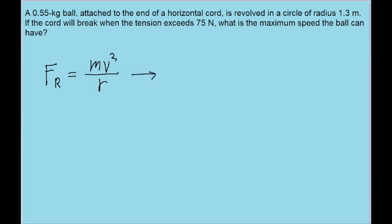We're going to want to solve for speed, so we'll rewrite this algebraically to solve for V. We'll multiply both sides of the equation by R, divide both sides by M, and then take the square root of the whole thing to isolate V. Doing that, we find that V is equal to the square root of the centripetal force times the radius divided by the mass.